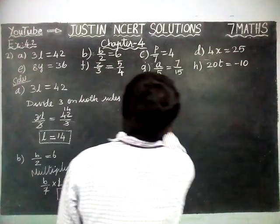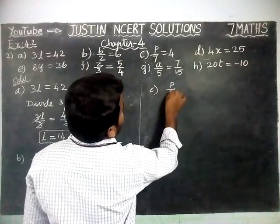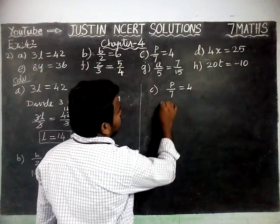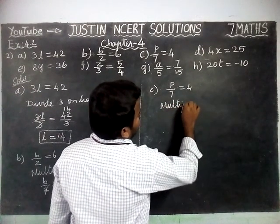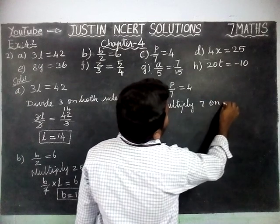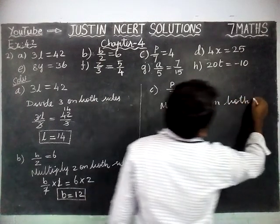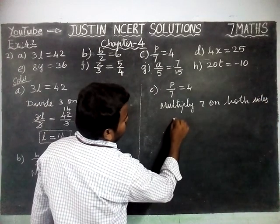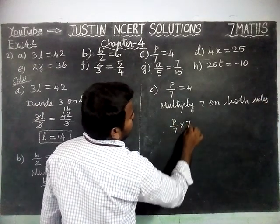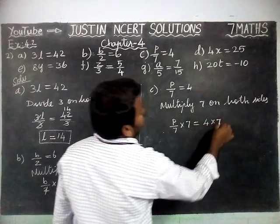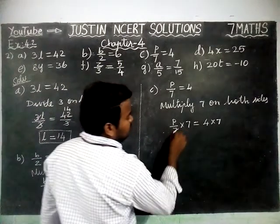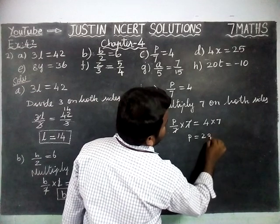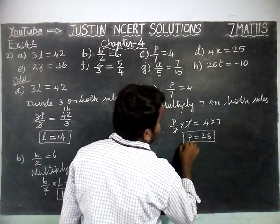Next, we are going to solve part C. P by 7 is equal to 4. Here, the number is in the denominator, so we are going to multiply 7 on both sides. P by 7 into 7 is equal to 4 into 7. The 7s get cancelled. P is equal to 28. The value of P is equal to 28.